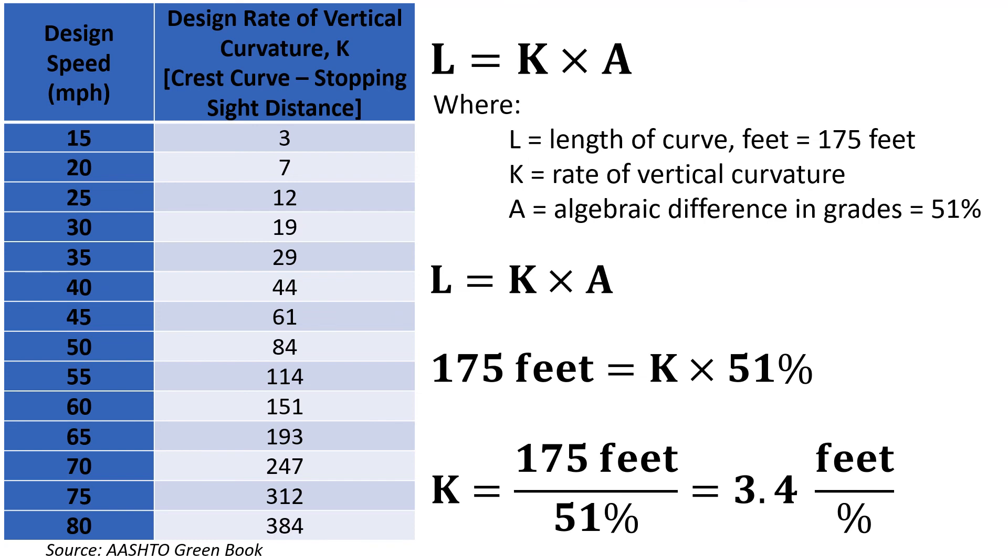And so what that is telling us is that 175 feet would typically be used to make a one percent transition between grades if the design speed was 60 to 65 miles per hour. So this just gives you an example of how sharp and how quickly that transition needs to take place for this particular vertical curve on Baxter Street.